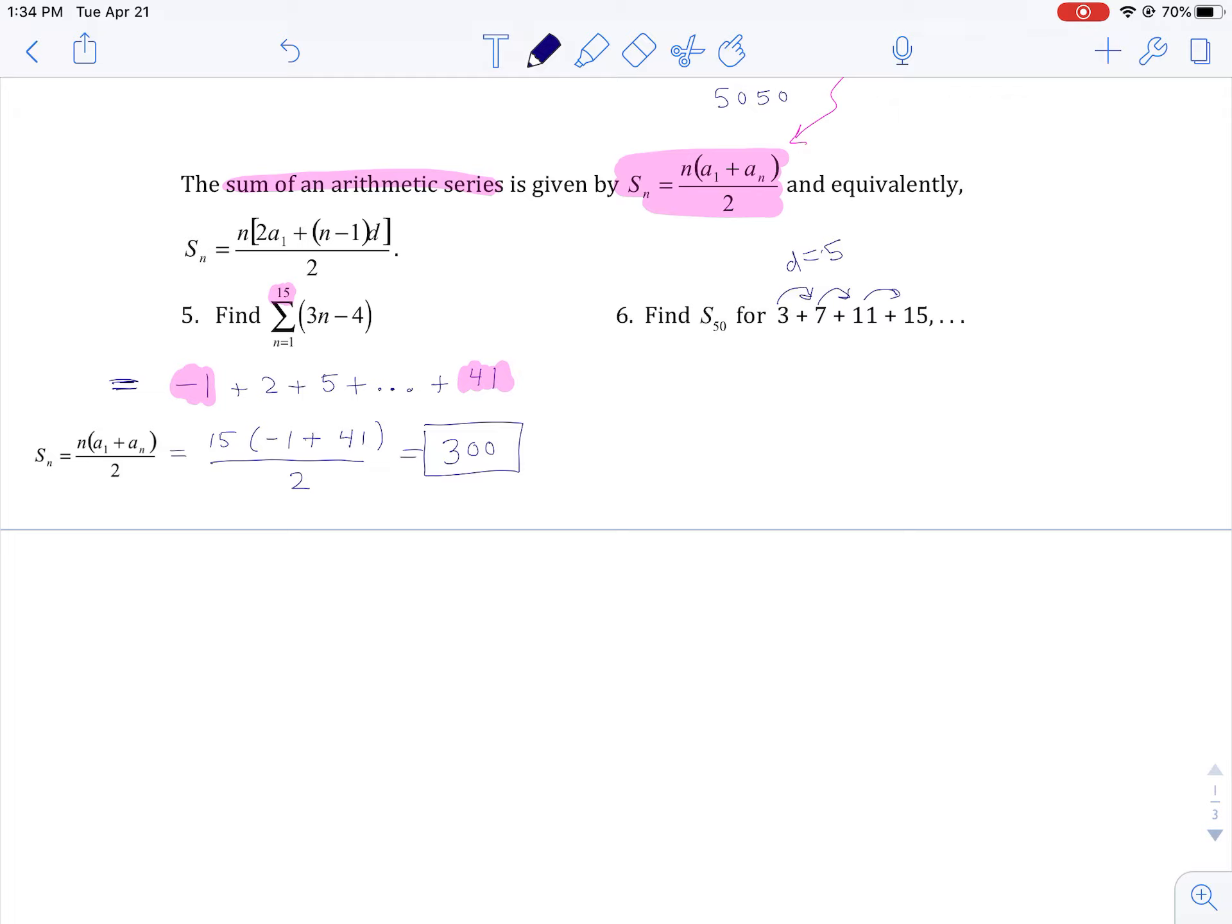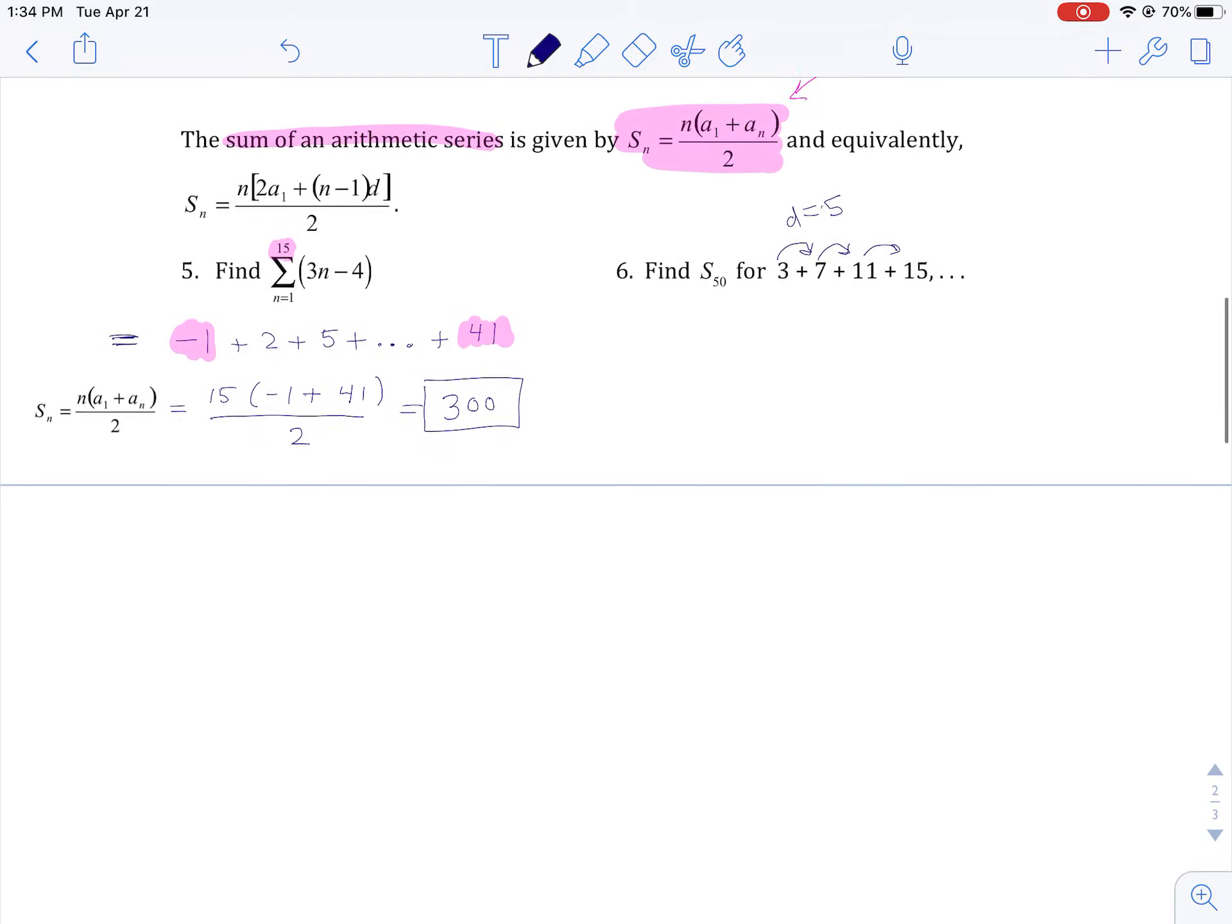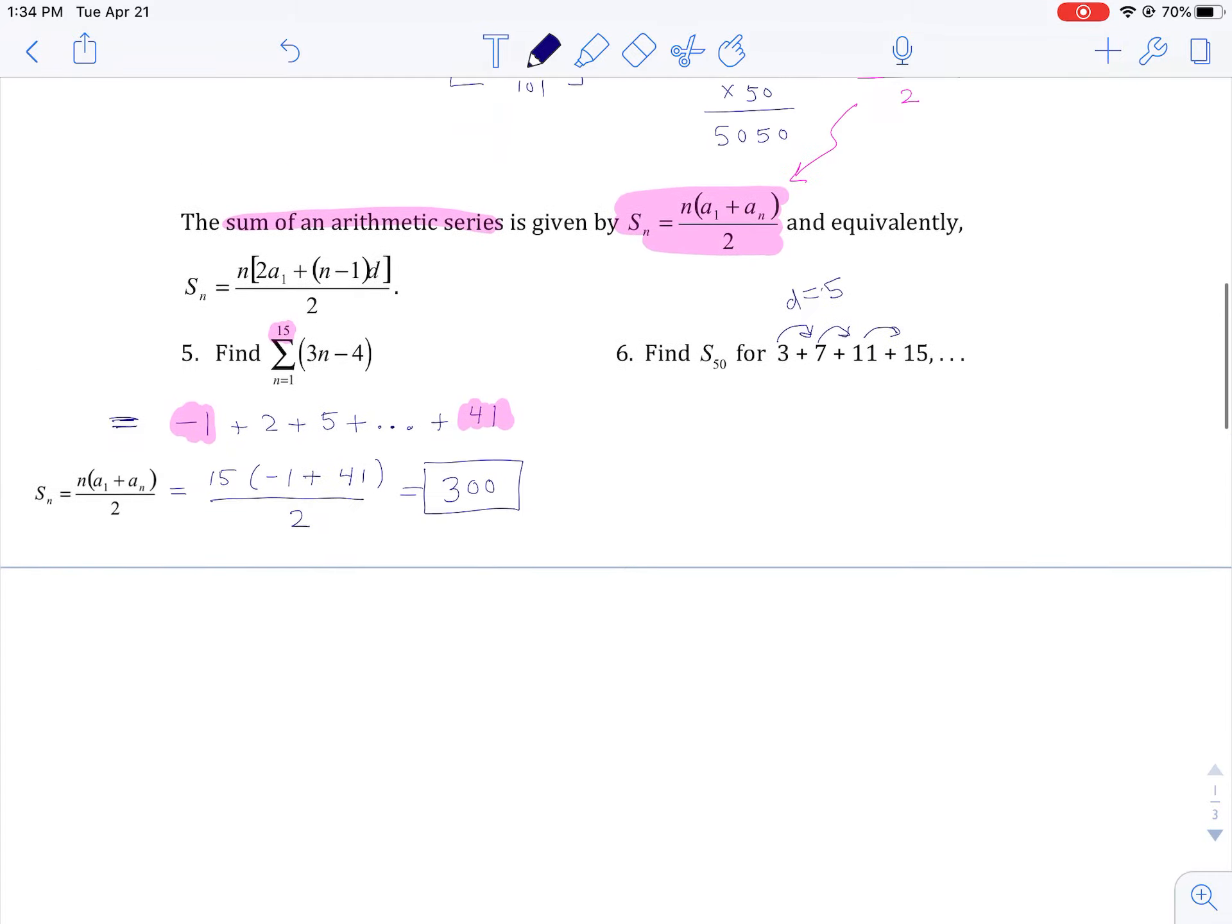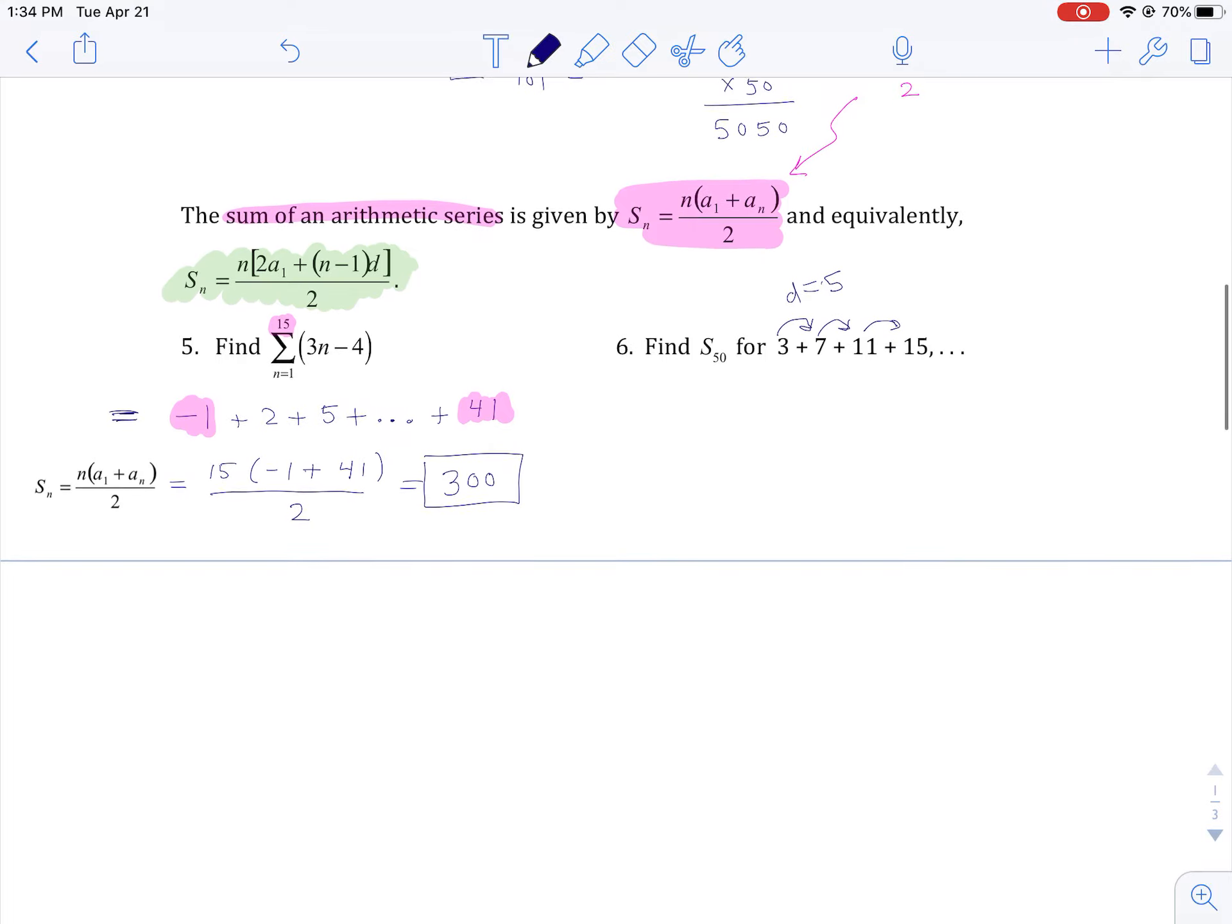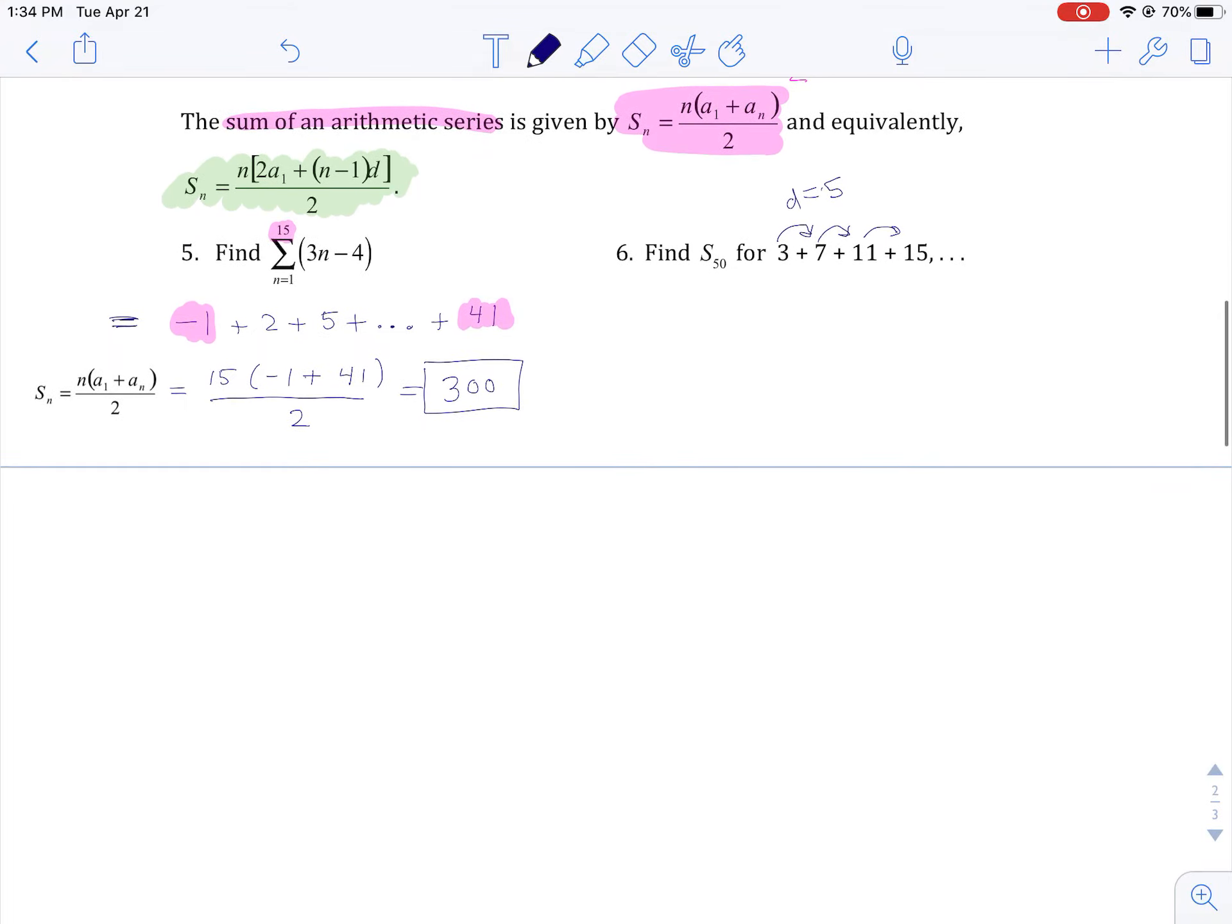The problem is I don't know the 50th term. Now, to be honest, it wouldn't take you long to figure out what the 50th term was. But we might as well derive the second formula over here. I guess I'll highlight it in a different color. I'll highlight it in green.